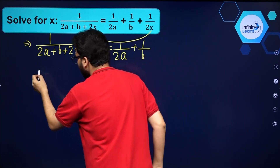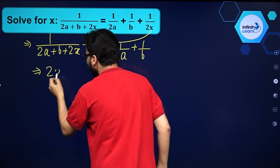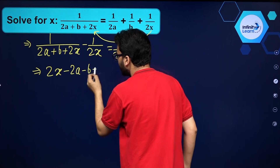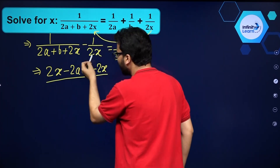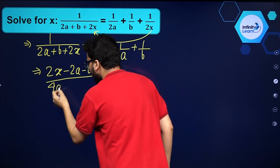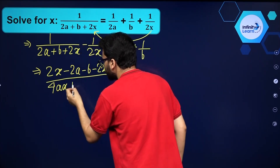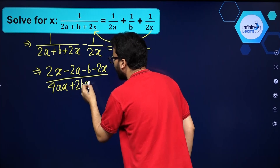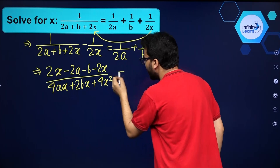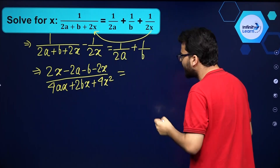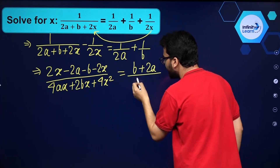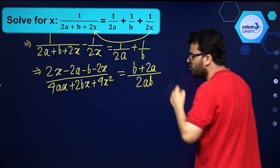So let's simplify this again. If I take LCM I'll get 2x minus 2a minus b minus 2x. Now in the denominator you have to multiply these terms, so you'll get 4ax plus 2bx and then 4x squared. In the same manner if I take LCM on the right hand side, I'll get b plus 2a and in the denominator it is 2ab.